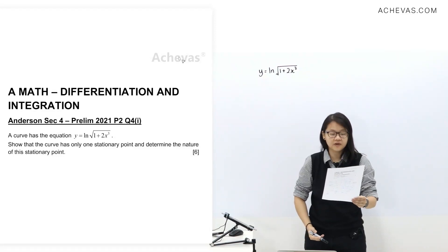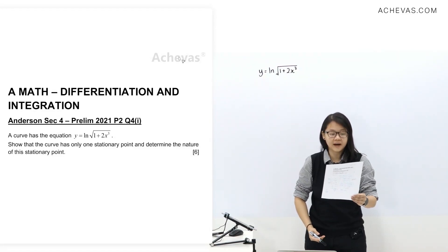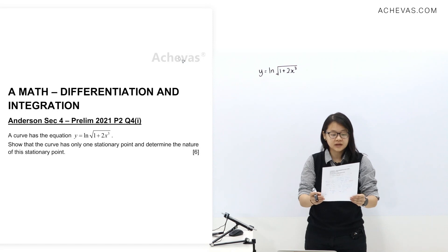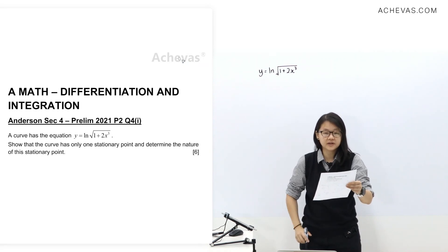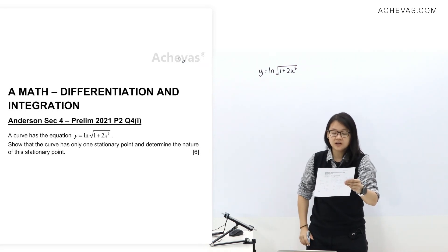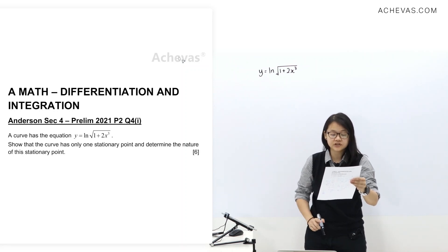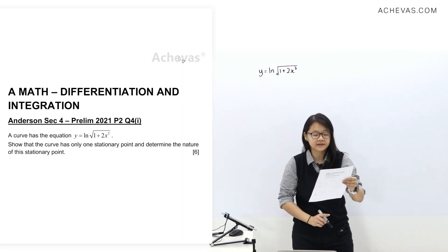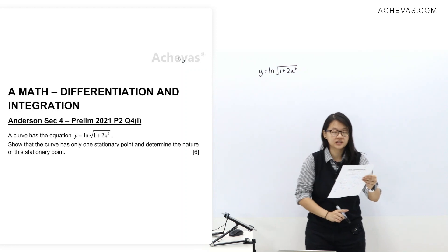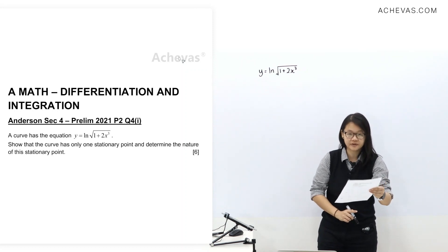Let's take a look at Anderson's set for Prelim 2021, Paper 2, Question 4, Part 1. A curve has the equation y equals ln of the square root of 1 plus 2x cubed. Show that the curve has only one stationary point, and determine the nature of this stationary point.